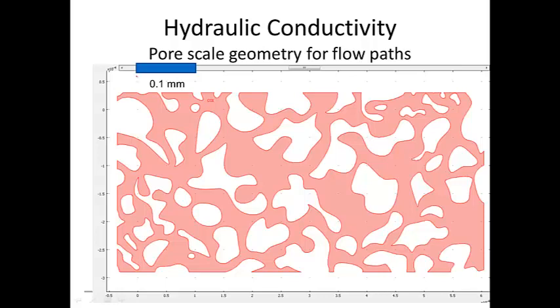This is a scale bar here — this is a tenth of a millimeter — so this overall region is probably about one millimeter across. What we're looking at is a photomicrograph, or at least an image derived from a photomicrograph. We take a piece of porous media, slice it very thinly, and trace out the solid materials and the pores. This pink region is the pore space. When we have flow through a porous media, we have flow through this complicated geometry of pore space.